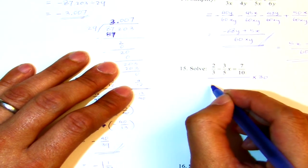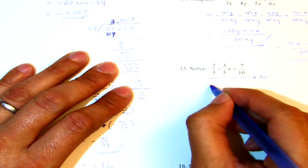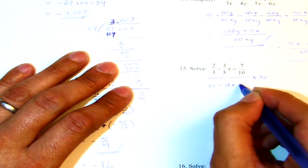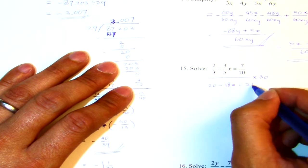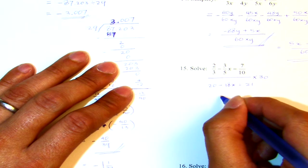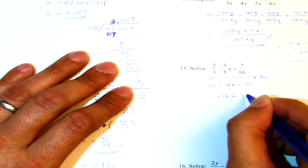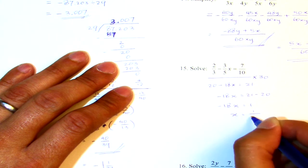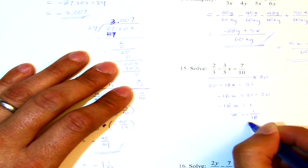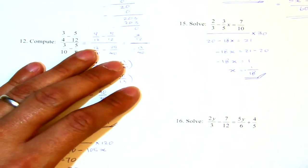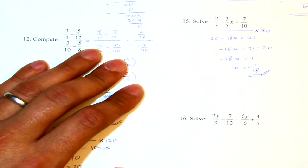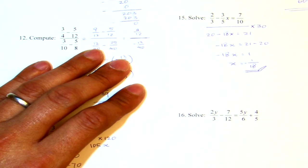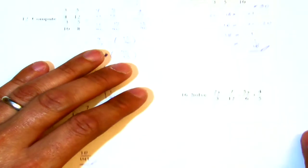The first fraction will give me 30 divided by 3 is 10 times 2. That's 20 minus. 30 divided by 5 is 6 times 3 is 18x equals to 30 divided by 10 is 3 times 7 is 21. And then I start doing the movement. I move the 20 to the other side. Negative 18x equals to 21 minus 20. Negative 18x equals to 1. X equals to negative 1 over 18. Now, you can try to do that with the conventional method. But I think in this case, because the LCD is small, it is more reasonable for us to use LCD method.